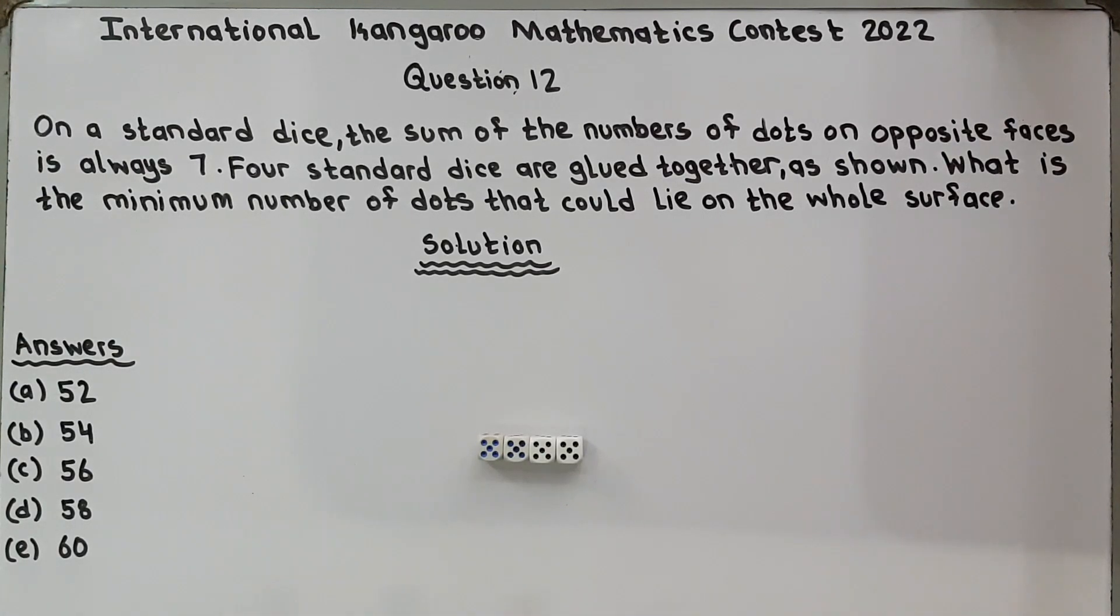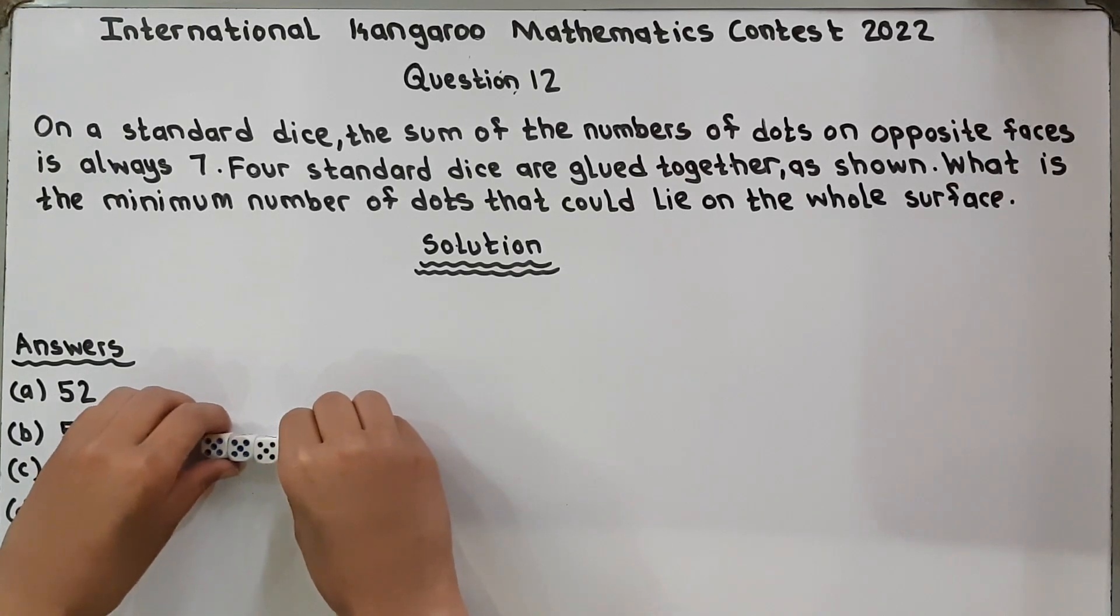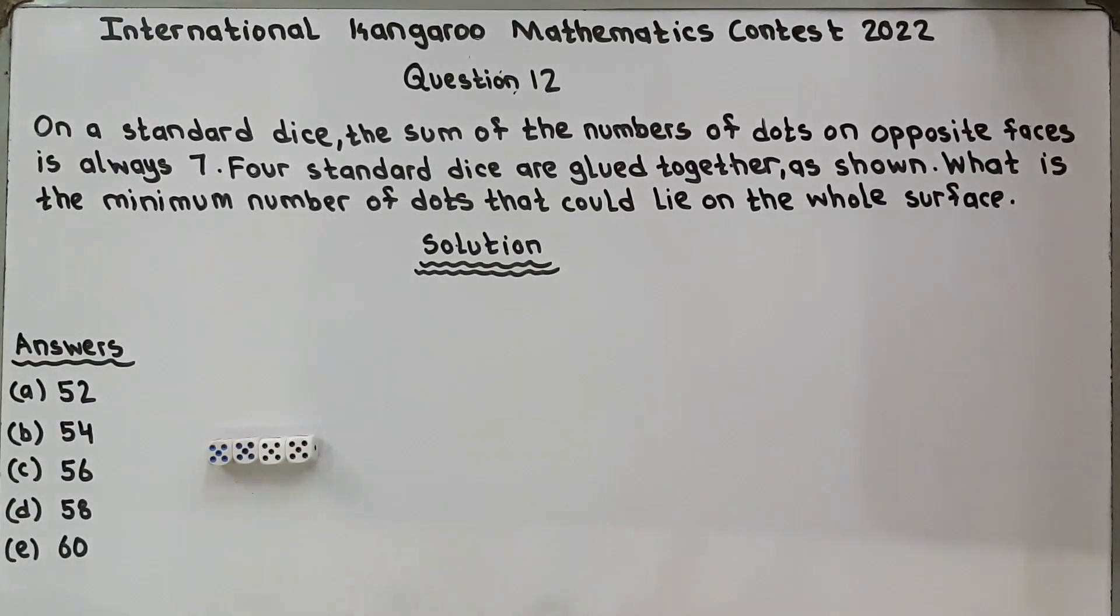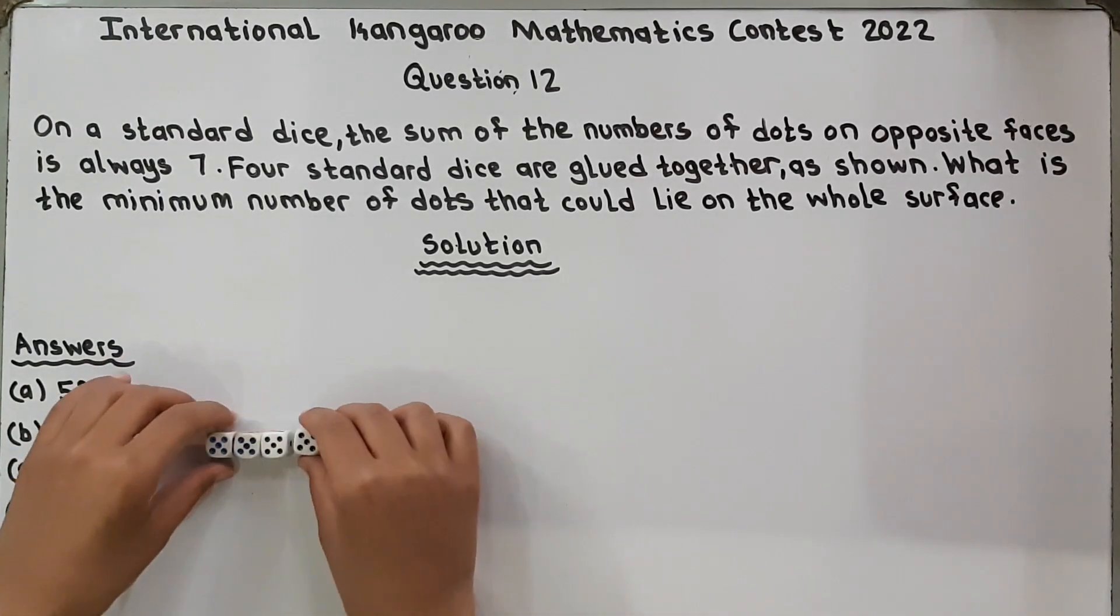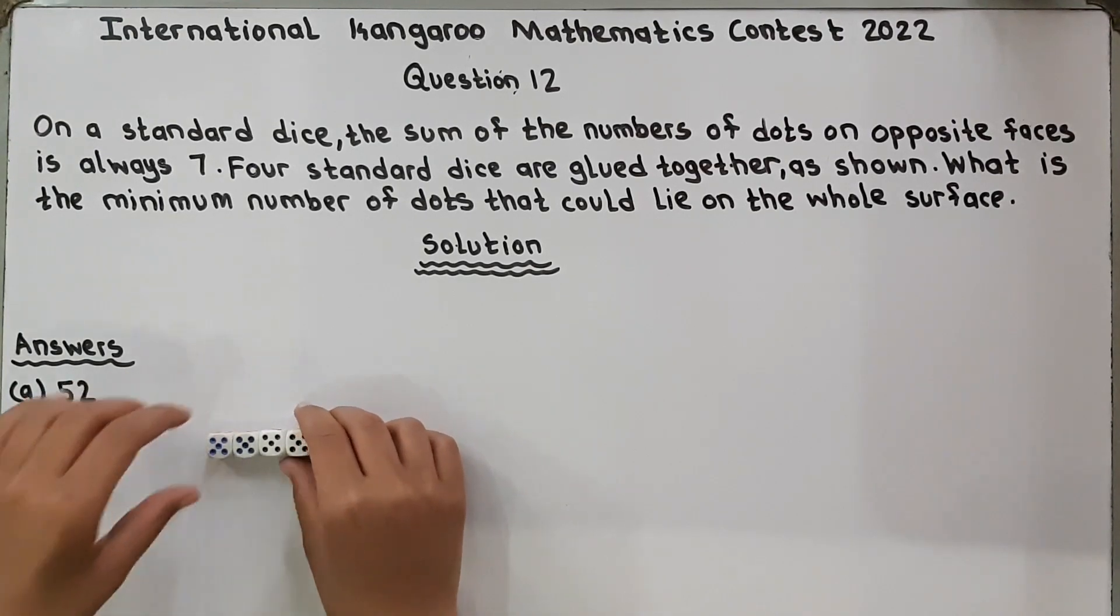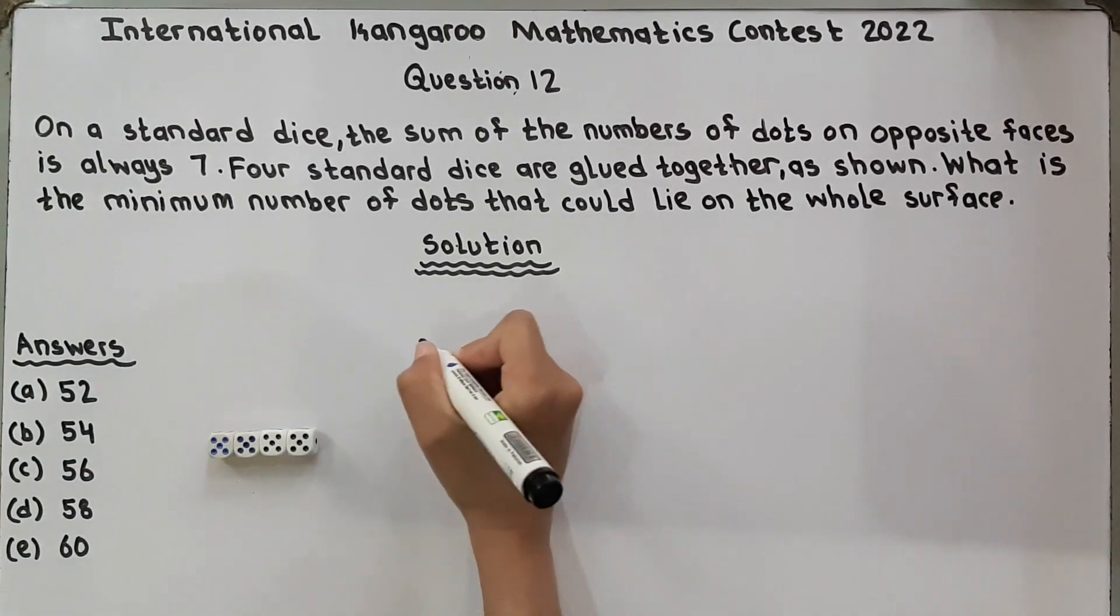So they are talking surface means this, this, this, this and this. So you have to find what are the minimum number of dots that could lie on the whole surface. 6 are not visible because they are glued like this. They are glued, so on the other side, 1 is visible. So let's start solving it.